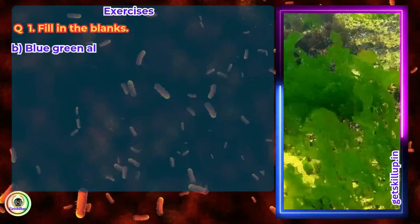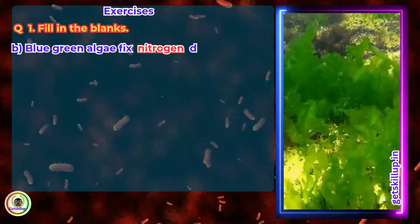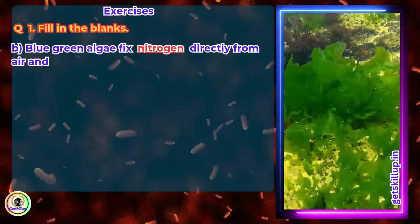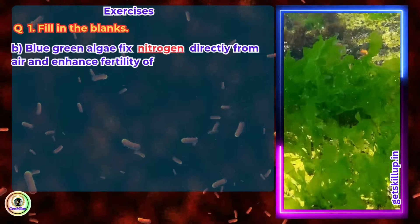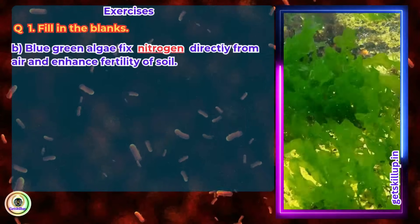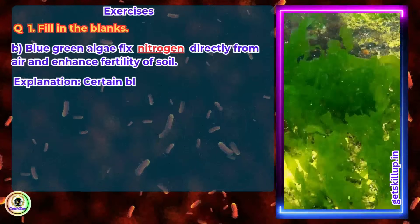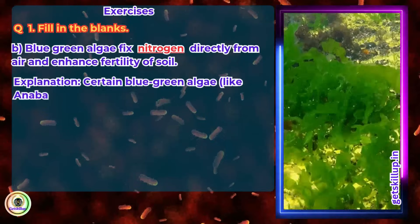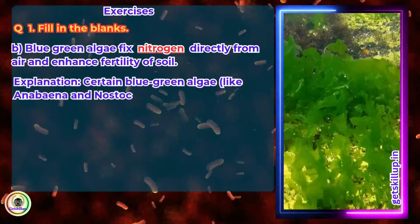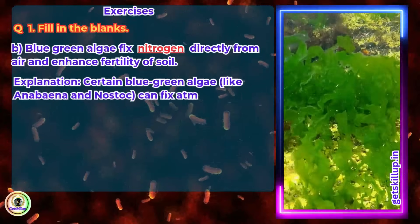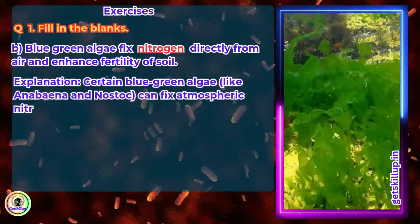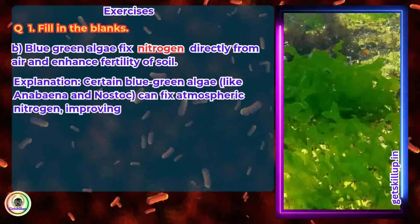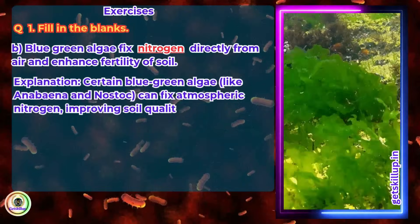Blue-green algae fix nitrogen directly from air and enhance fertility of soil. Certain blue-green algae like Anabaena and Nostoc can fix atmospheric nitrogen, improving soil quality naturally.